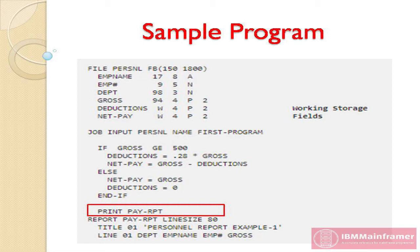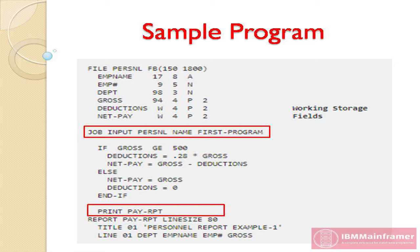This name, pay-rpt, ties the print statement to a specific report of the same name, as indicated on the report statement. If the report name is not included, the first report in the job activity section is executed, whether or not it has a name. After the report statements have been executed, control is returned to the beginning of the job activity section, where the next record is processed or end-of-file processing is performed.